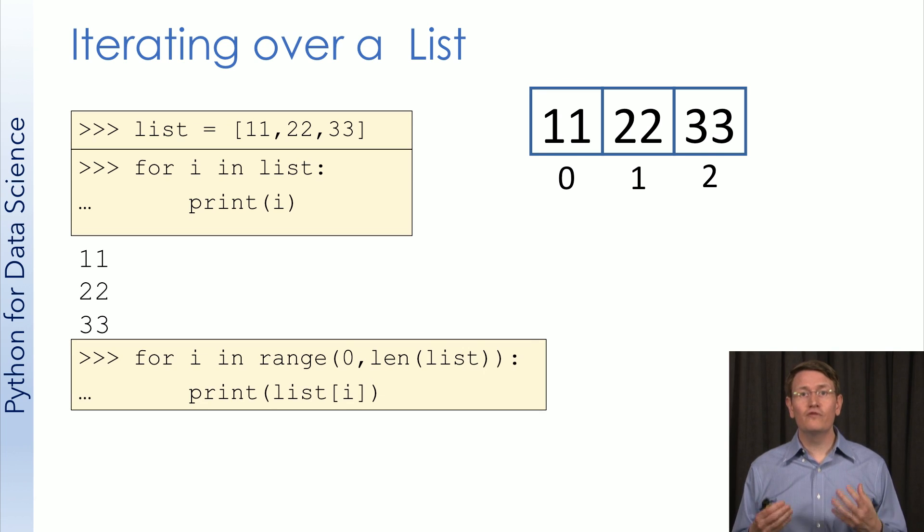For those of you more familiar with C or Java, you could also write this loop like this. Here, I'm letting i be an index into the list, and letting i go from 0 to the length of the list, which is 3. Notice here that len, the len function, returns the length of the items in the list.